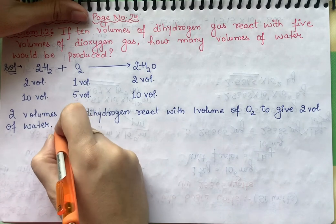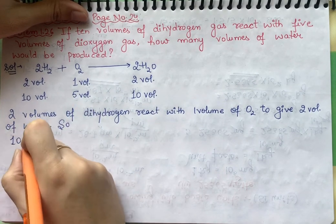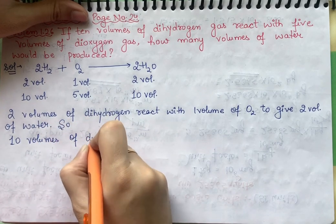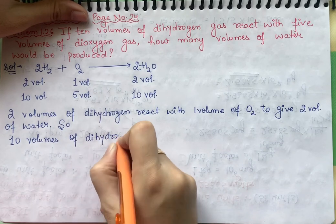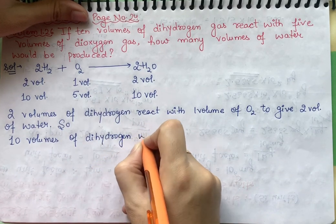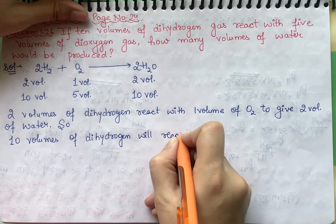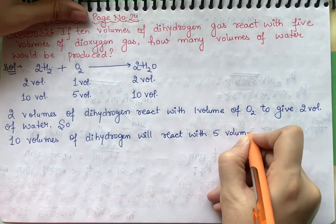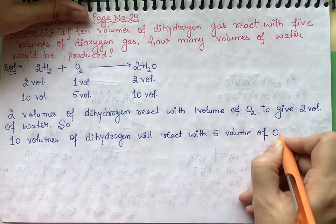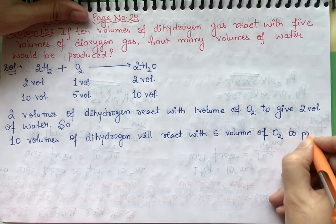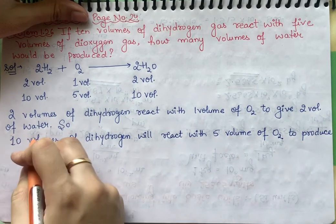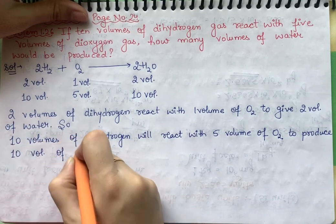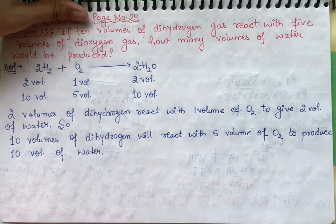So we can say 10 volumes of dihydrogen will react with 5 volumes of O2 to produce 10 volumes of water. So how much water has been formed? 10 volumes, done.